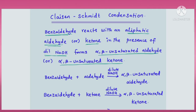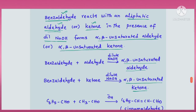Basically it is a reaction between an aromatic aldehyde and an aliphatic aldehyde or ketone. If an aromatic aldehyde and aliphatic aldehyde react, the product is an alpha-beta unsaturated aldehyde. If benzaldehyde reacts with an aliphatic ketone, the product is an alpha-beta unsaturated ketone. This reaction occurs in the presence of dilute base.